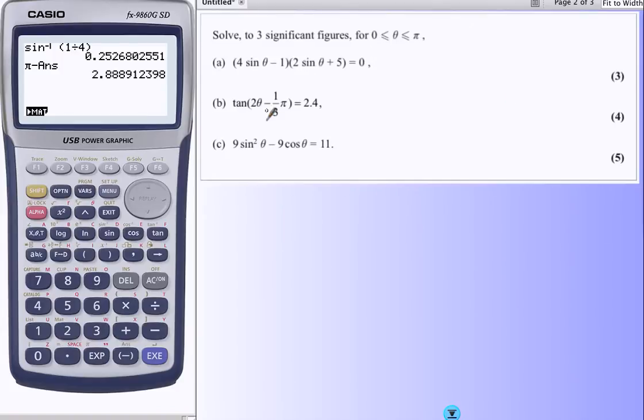Part B, what we've got here is a rather grim looking tan thing. It's this grim looking bracket that creates the problems. The way we deal with this is to pretend it's not there. We think about a simple equation, tan of x equals 2.4. And if that's true...